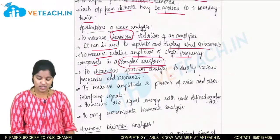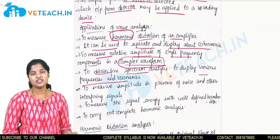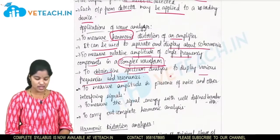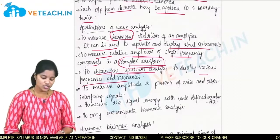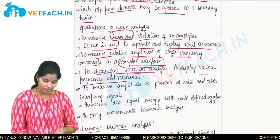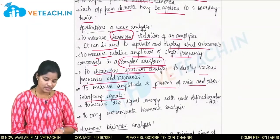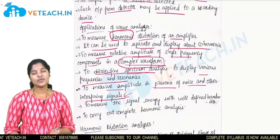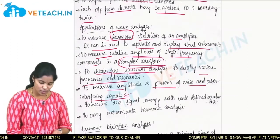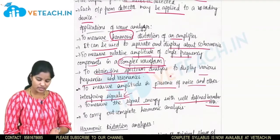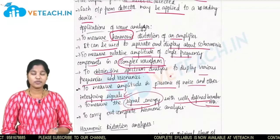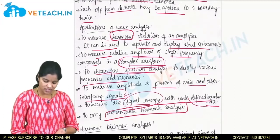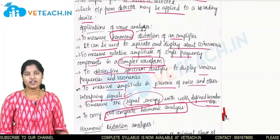It is used to obtain frequency spectrum analysis to display various frequencies and resonances. It can measure amplitude in the presence of noise and interference signals. It is used to measure signal energy within a well-defined bandwidth. It can also be used to carry out complete harmonic analysis of a signal.